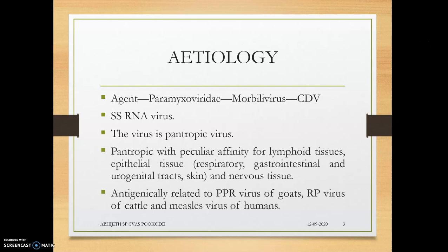The causative agent belongs to the family Paramyxoviridae, genus Morbillivirus — a common single-stranded RNA virus. Canine distemper virus is a pantropic virus, meaning it loves all systems of the body. 'Pan' means universal and 'tropic' means to love. It has a peculiar affinity for lymphoid tissue, epithelial tissue, and nervous tissue.